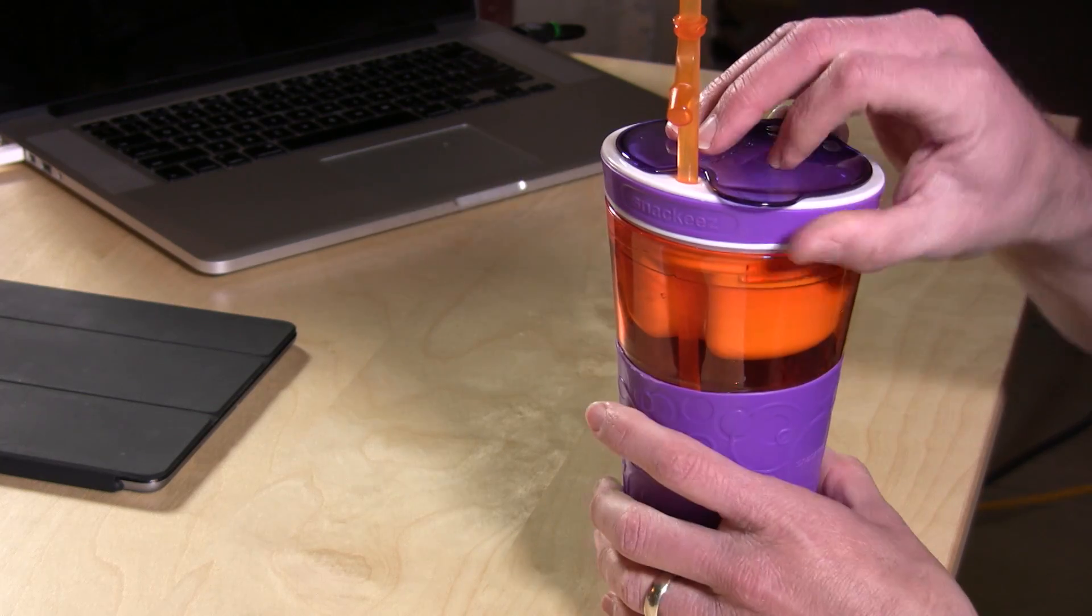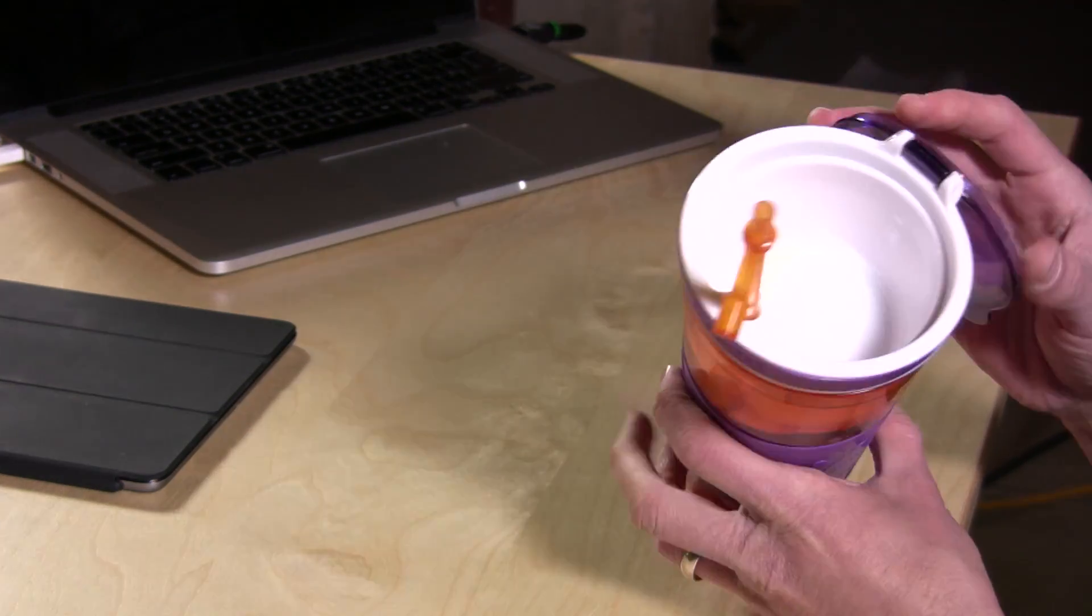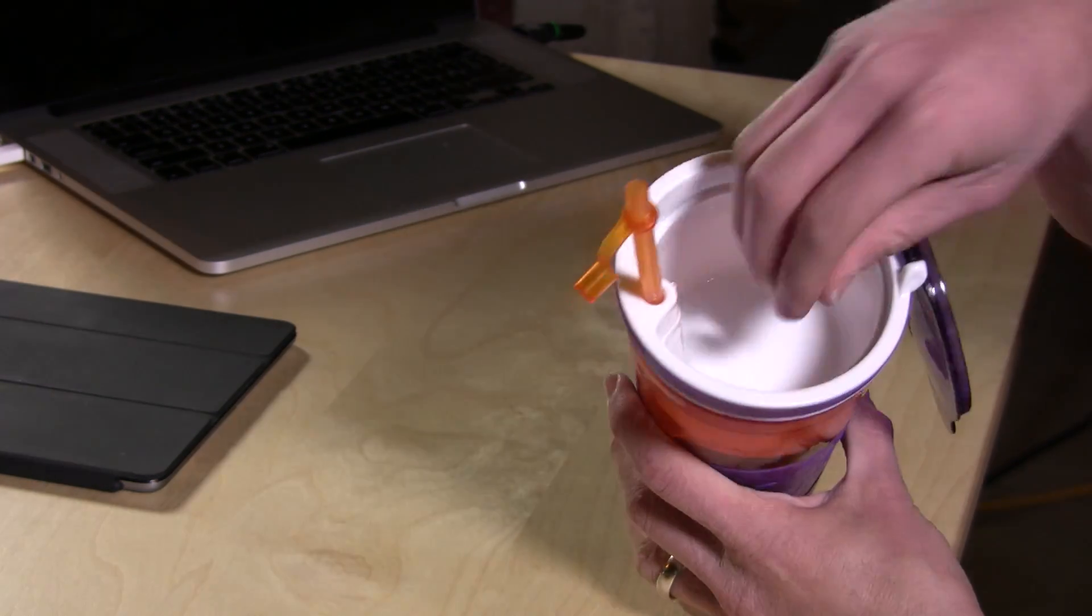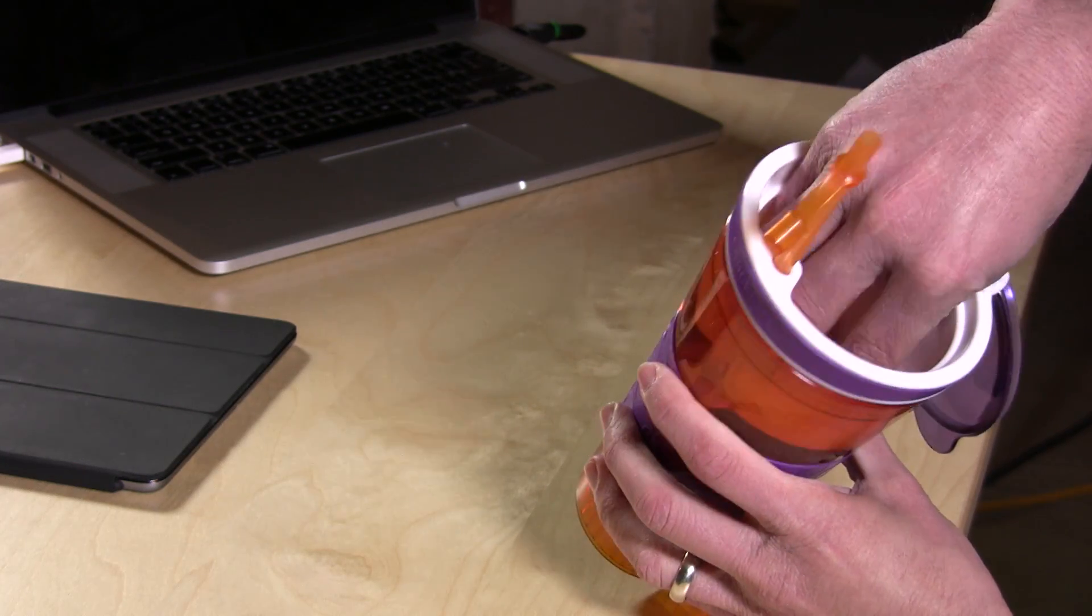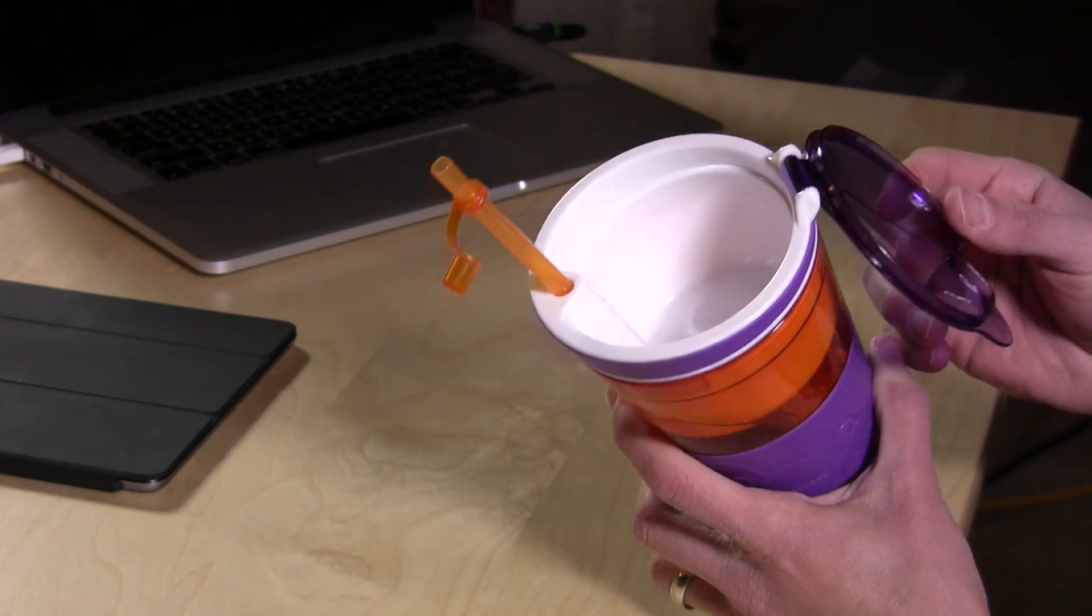But it also has another little cup at the top that you can store snacks in and it's about a cup in volume, so you can really control the portions of stuff that your kids are eating, which I find to be very useful.